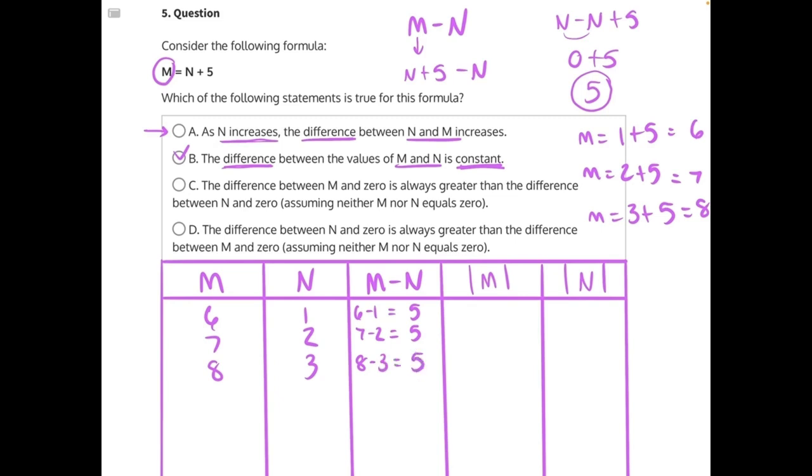So A is incorrect, because as N is increasing, the difference is not also increasing. It is staying the exact same, or it is staying constant. So A can be eliminated. At that point, you could probably pick B as your correct answer. But let's say you didn't. Let's say you went on to C and D.